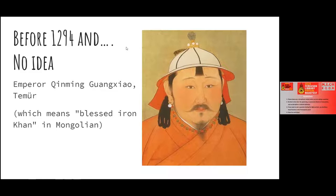Kublai Khan was the Yuan emperor for a period. We know for certain there was a case in 1294 about a couple of guys who were caught gambling and had woodblocks to make more games for themselves. That's when we believe things were really getting going, and things moved quite rapidly after that.